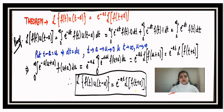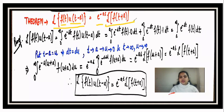There is another theorem related to the unit step function: if we want to calculate the Laplace of f(t)·u(t - a), where the function is f(t) (not f(t - a)), we cannot directly apply the second shifting theorem. The Laplace transform of f(t)·u(t - a) equals e^(-as) times the Laplace of f(t + a) — the variable t is shifted by replacing t with t + a.